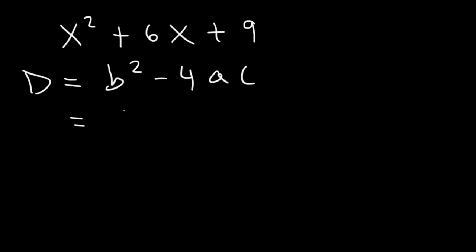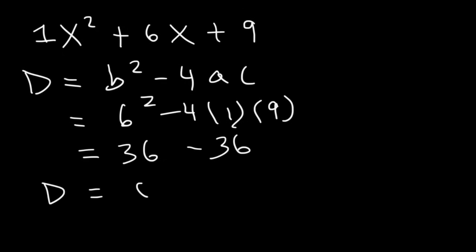b is 6, a is the number in front of x squared, that's 1, and c is 9. 6 squared, 6 times 6 is 36. 4 times 9 is 36. So the discriminant is equal to 0.